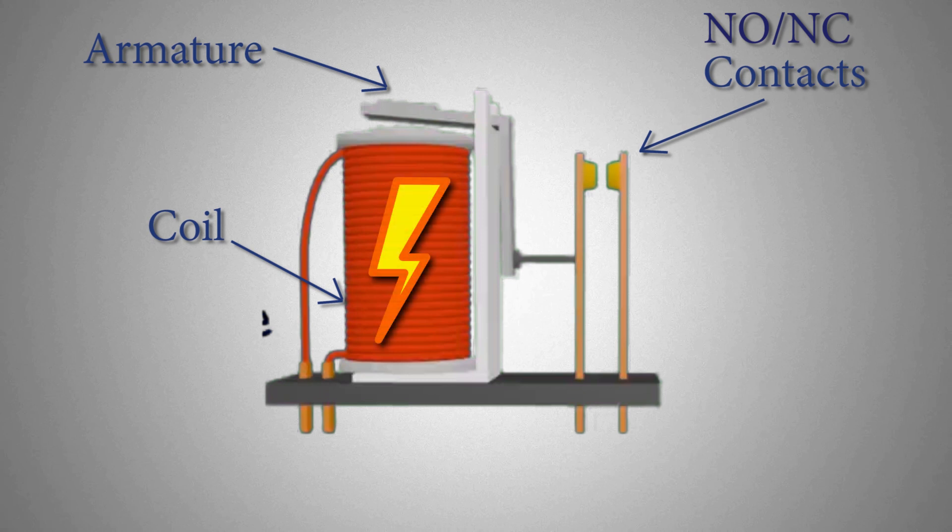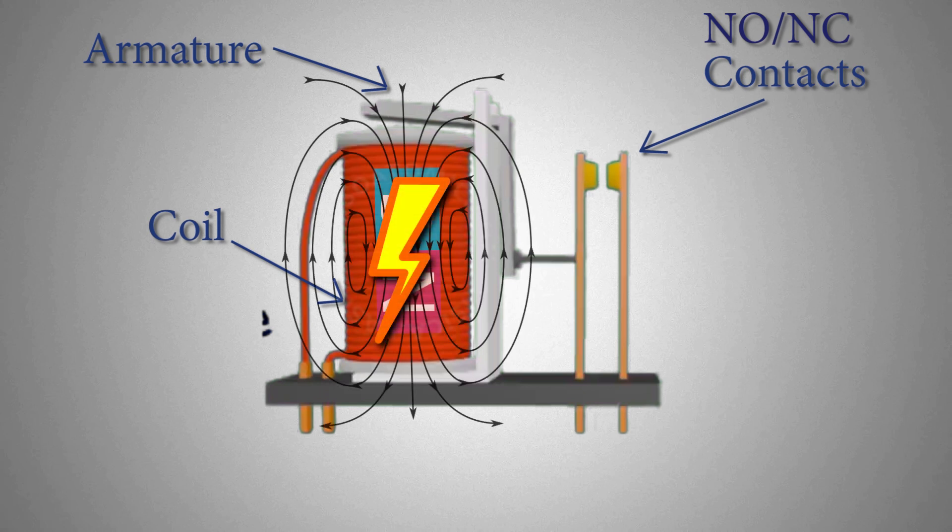When a coil is energized by applying voltage, it creates a magnetic field around the coil. We can say that it becomes an electromagnet.